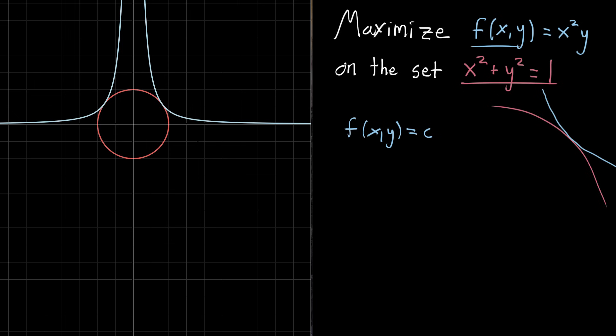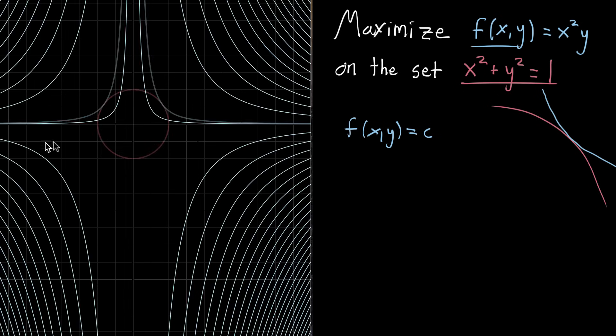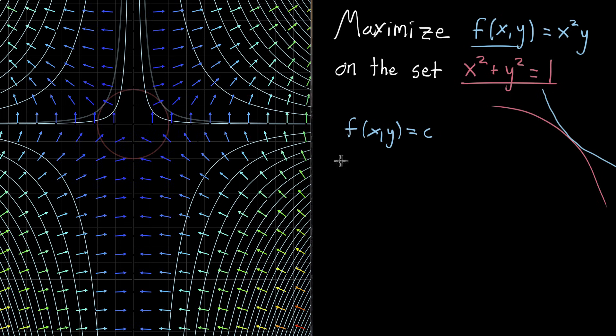And the main tool we're going to use here is the gradient. So let me go ahead and draw a lot more contour lines than there already are for x squared times y, so this is many of the contour lines. And I'll draw the gradient field, the gradient field of f.